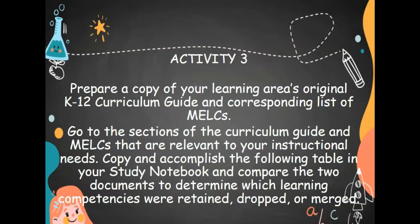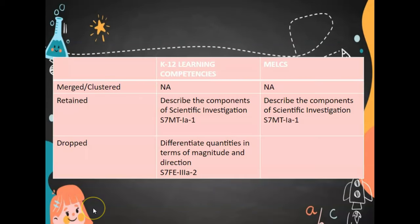Activity number 3: Prepare a copy of your learning area's original K-12 curriculum guide and the corresponding list of MELCS. Go to the sections of the curriculum guide and MELCS relevant to your instructional needs. Copy and accomplish the following table in your study notebook and compare the two documents to determine which learning competencies were retained, dropped, or merged. K-12 learning competencies vs. MELCS: merged, clustered, retained, and dropped.